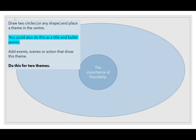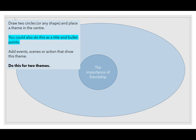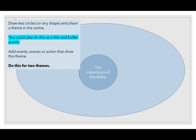You're going to draw two circles — one in the middle and a bigger one around it. If you're working on a computer and that's tricky, you can just do a title and then bullet points underneath. You're going to think about a theme and then add events or scenes that show that theme. A theme I think is very important to the text is the importance of friendship. If you want to try this independently, pause the video, write in your book or on your device, and think of scenes from the film. You can go back to your events list in OneNote and think about how they show the importance of friendship.